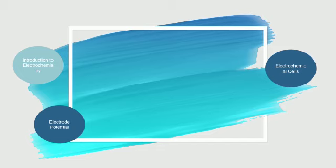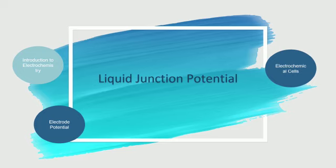Now we are going to study today's topic: liquid junction potential. Liquid junction potential arises when electrons or ions are present in different cells.